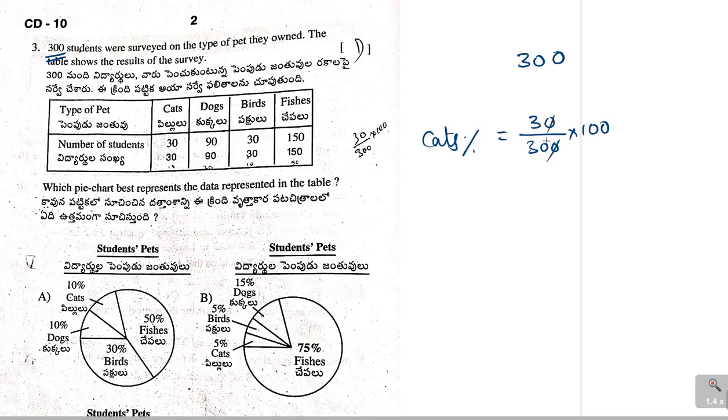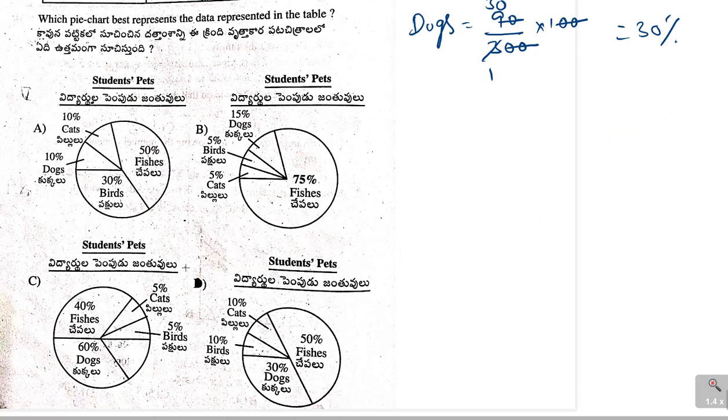What about dogs? Dogs equal to 90. So, 90 by 300 into 100. Two zeros, two zeros will be cancelled, 3 times 1 and 3 times 30. That will be 30%. So, cats 10%, dogs 30%. Let us check in the options. Option D is correct.